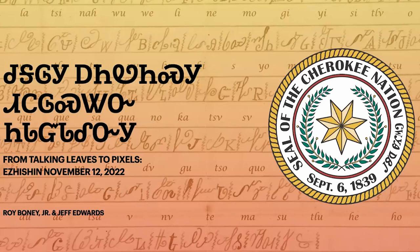Our talk is called 'From Talking Leaves to the Pixels.' In Cherokee, that's kind of saying it's from the beginning — from Talking Leaves to now, kind of 'pictures' is what it's really saying in Cherokee. We call it Talking Leaves because that's what they say Sequoia kind of referred to as our writing system, but there's a debate about that, which we won't go into here.